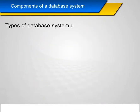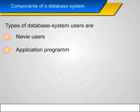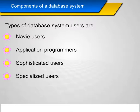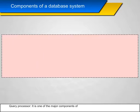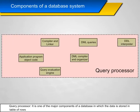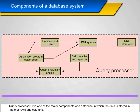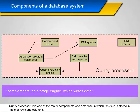Types of database system users include naive users, application programmers, sophisticated users, and specialized users. The query processor is one of the major components of a database, in which the data is stored in a table of rows and columns. It complements the storage engine, which writes data to and from storage media.